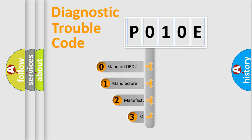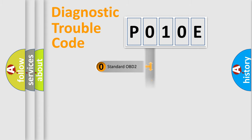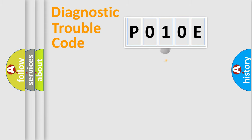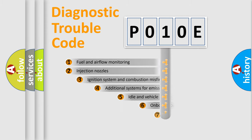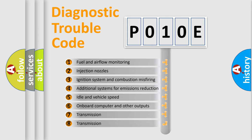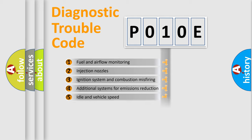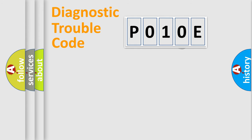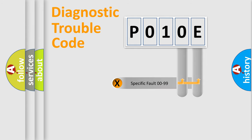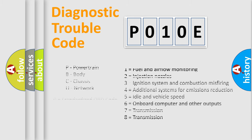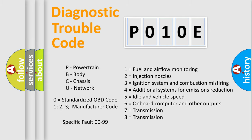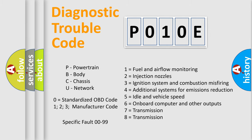If the second character is expressed as zero, it is a standardized error. In the case of numbers 1, 2, or 3, it is a manufacturer-specific error. The third character specifies a subset of errors. This distribution is valid only for the standardized DTC code, and only the last two characters define the specific fault of the group. This division is valid only if the second character is expressed by the number zero.